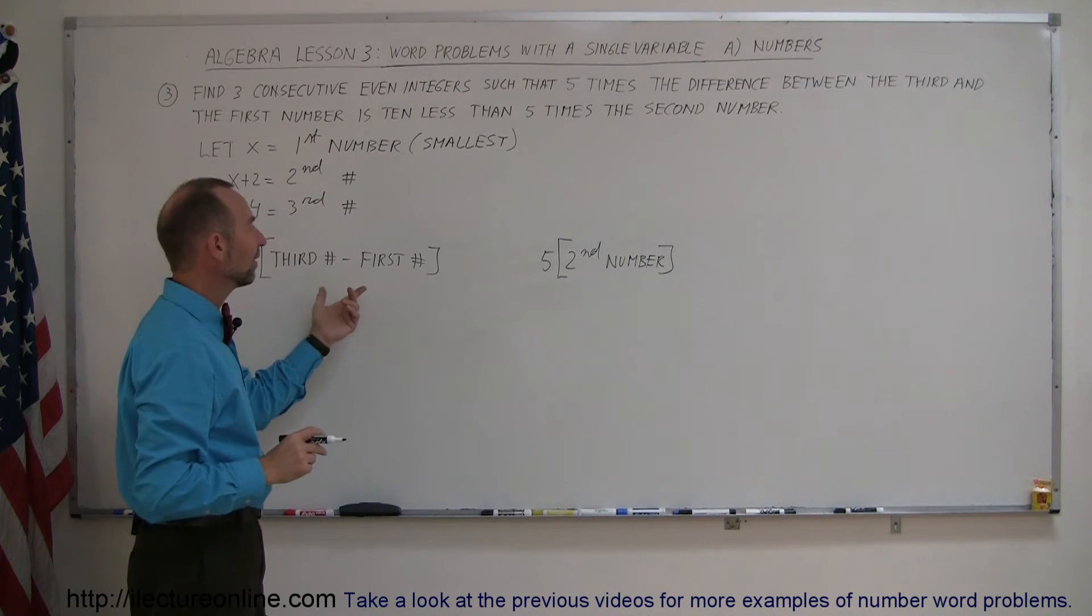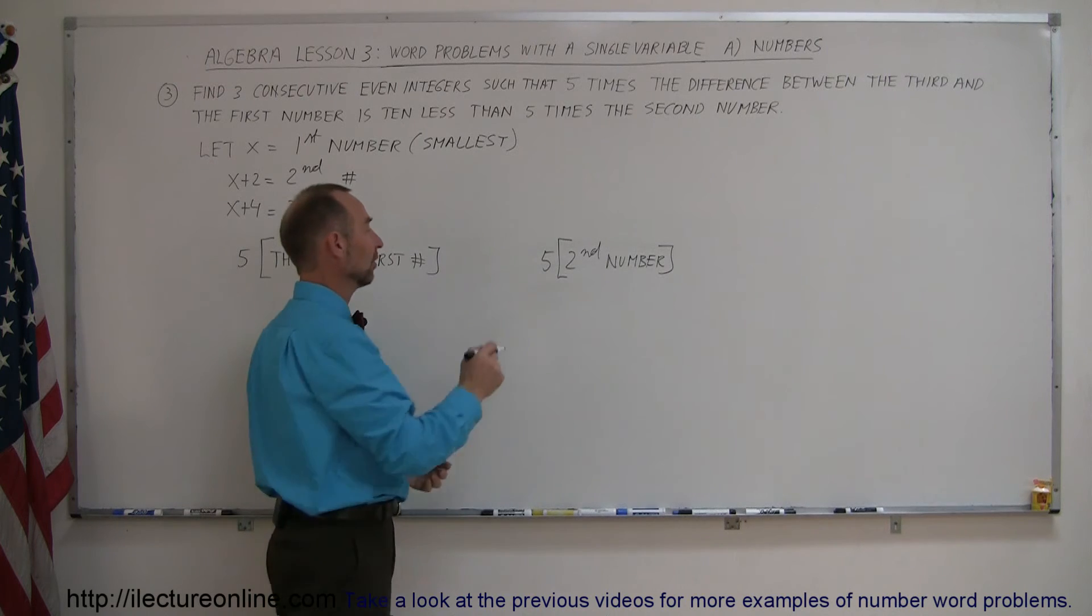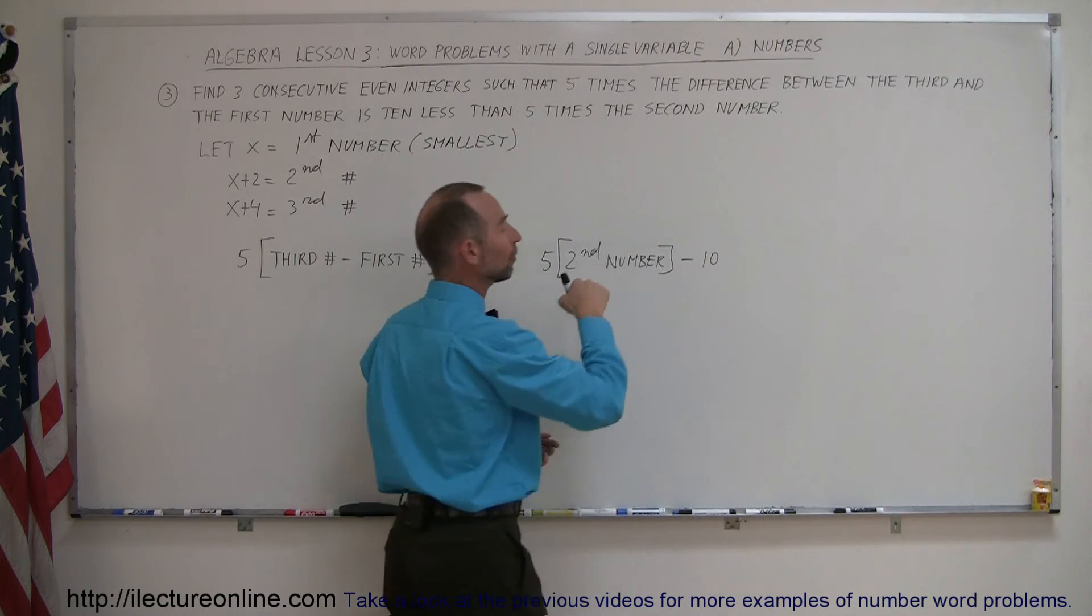And this is 10 less than this. So it's this minus 10. So this is equal to 10 less than 5 times the second number.